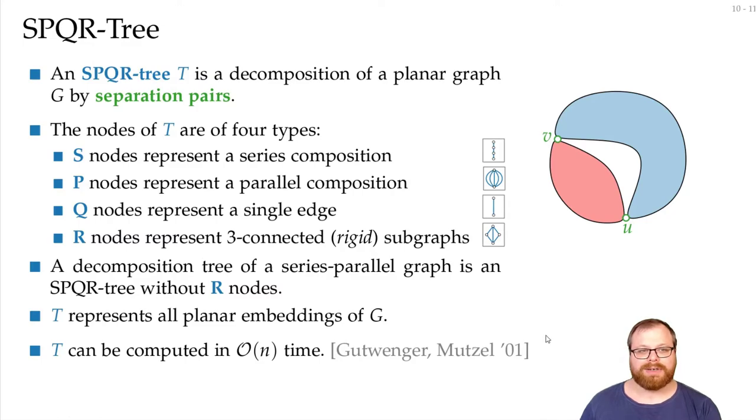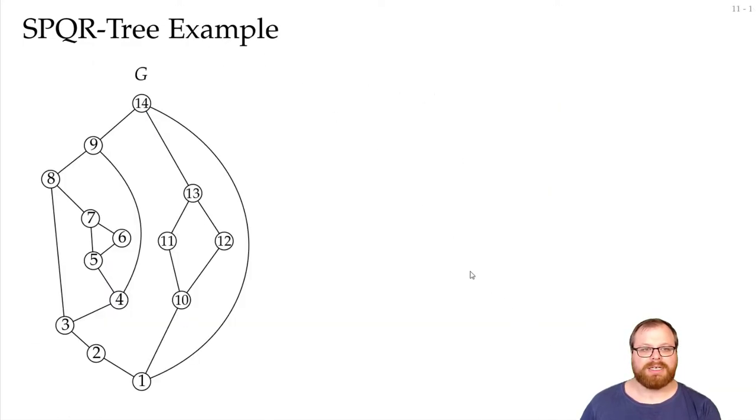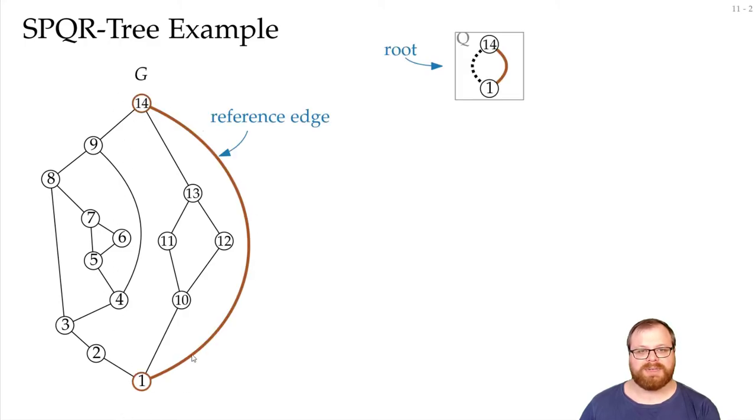So, let's have a look at one example of this SPQR tree. We have a graph G here, and we try to construct our SPQR tree. In the beginning, we have a separation pair 1 and 14, that's our nodes S and T. We will use an edge between them as the reference edge. From now on, in addition to what we have, we will always have a reference edge in our node, so that we know where to put things back later on.